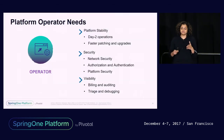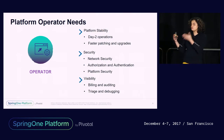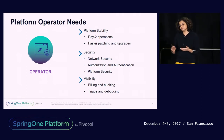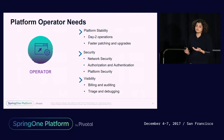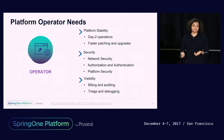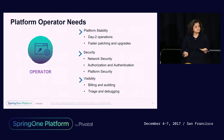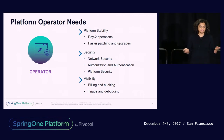Let's start by understanding the different personas we considered when looking at what a networking solution needs to provide. From an operator perspective, platform stability is a big concern — making sure the platform is up and running, patches are easy, and day two operations are smooth. The second thing we hear a lot about is security — network security, authorization, authentication, and overall platform security. And finally, visibility: being able to log, triage, and debug things.